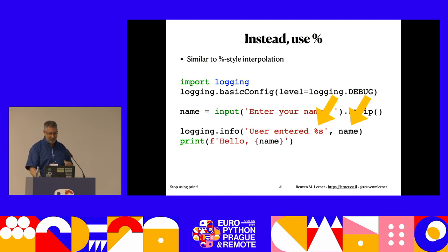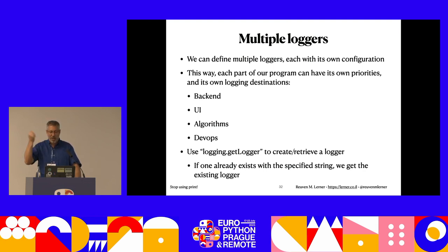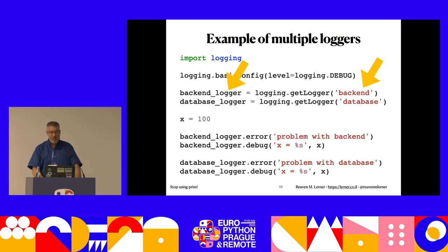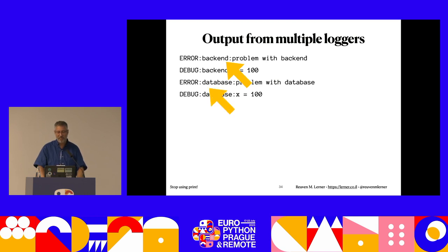Let's talk about multiple loggers. By default we have the root logger, but we can set multiple loggers each for a different part of our system - a backend logger, a UI logger, an algorithms logger. Each logger can have its own output in different places. Create them using getLogger() with a different string, and every time you use the same string you get the same logger back. When you say backend_logger.error() versus database_logger.error(), you can differentiate between which part of your system the message came from.